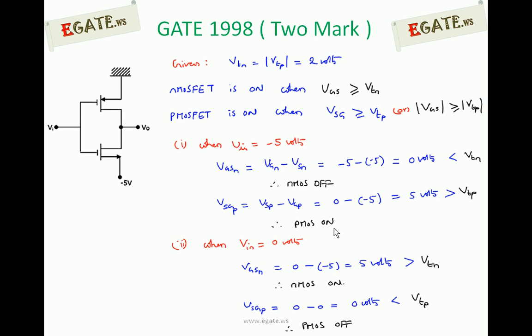Case 2: when V input is 0 volts, Vgs_N = 0 − (−5) = plus 5 volts, which is greater than the threshold voltage of N-MOS, so N-MOS is on. And Vsg_P = 0 − 0 = 0 volts, which is less than |Vtp|, so P-MOS is off. For V input = 0 volts: N-MOS is on and P-MOS is off.